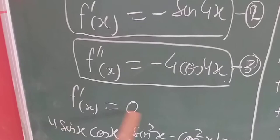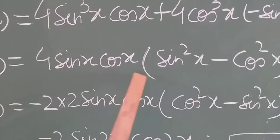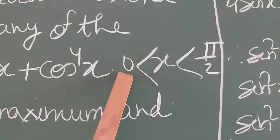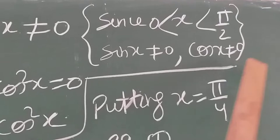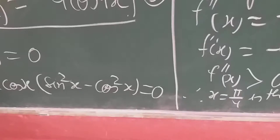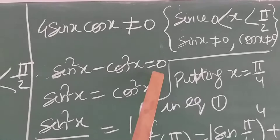Setting f'(x) = 0 gives 4sinx·cosx·(sin²x − cos²x) = 0. Since x belongs to (0, π/2), the first quadrant, sinx ≠ 0 and cosx ≠ 0, so 4sinx·cosx ≠ 0. Therefore we must have sin²x − cos²x = 0, which gives sin²x = cos²x, i.e., sin²x / cos²x = 1, so tan²x = 1.